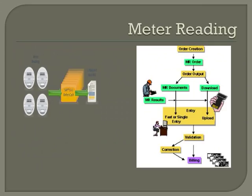Meter reading is the most important activity in the utility service industry — a regular activity to record the consumption. To streamline this activity, we generate or print meter reading orders. Meter reading orders form the basis on which reading results are collected from actual meters. Once readings are obtained from the actual site, we enter the results into the system, the system performs validation, and after validation the results are released for billing. In the meter-to-cash process, meter reading order is the first activity. We have provision to record single meter reading orders, mass meter reading orders, and print these orders for service personnel. Consumers can also enter meter reading results through the web.